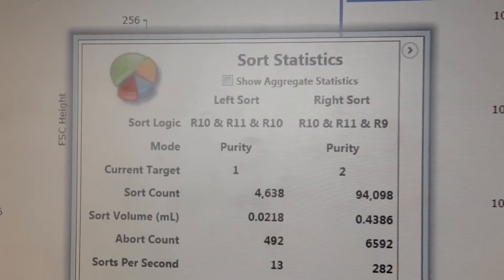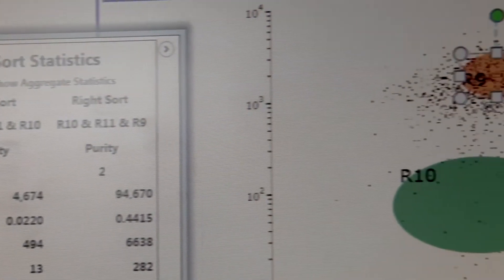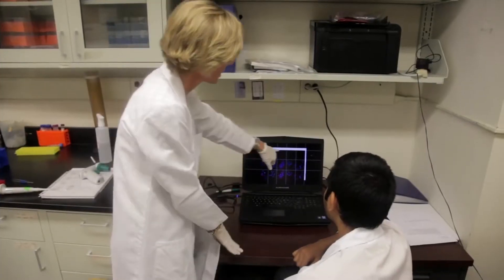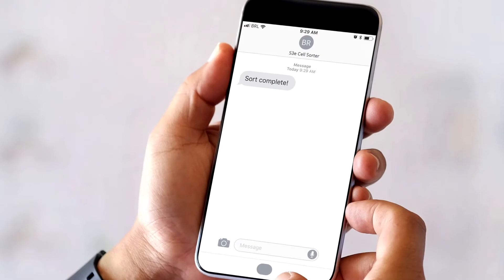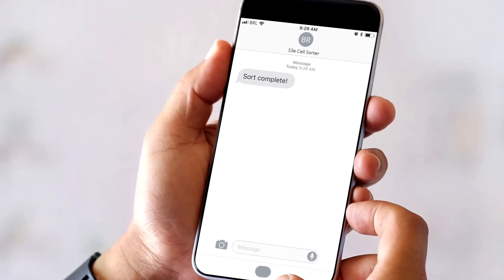You get automated sort monitoring and sample loss prevention features that keep your precious samples safe, while freeing you from sitting in front of an instrument all day. You can get text and email notifications of your sort status even while you're away.